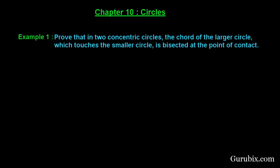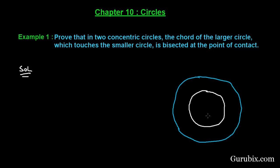Welcome friends. Let us solve example number one of chapter 10. The example says to prove that in two concentric circles, the chord of the larger circle which touches the smaller circle is bisected at the point of contact. Suppose we have two concentric circles with center O. This is circle C1 and this is circle C2. We have a tangent AB which touches circle C2 at point P, and we have to prove that AP equals PB.